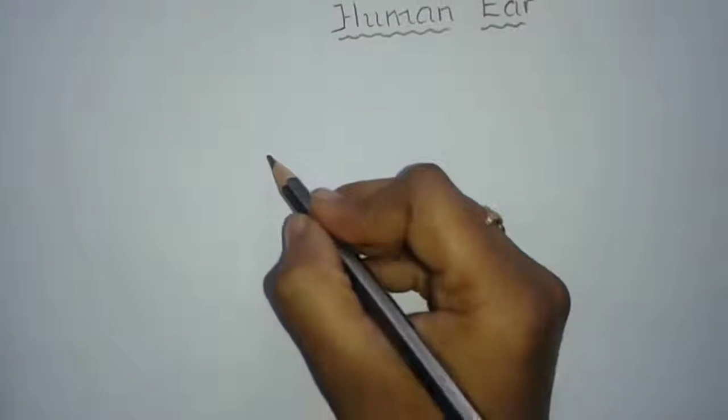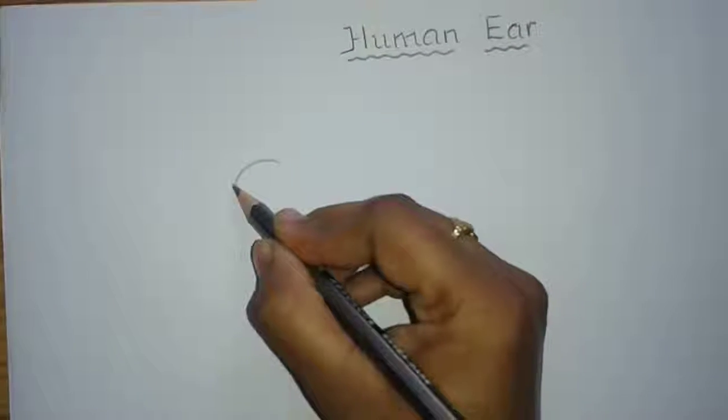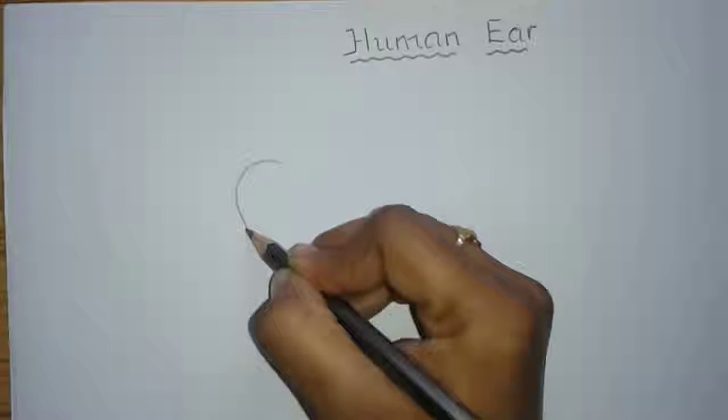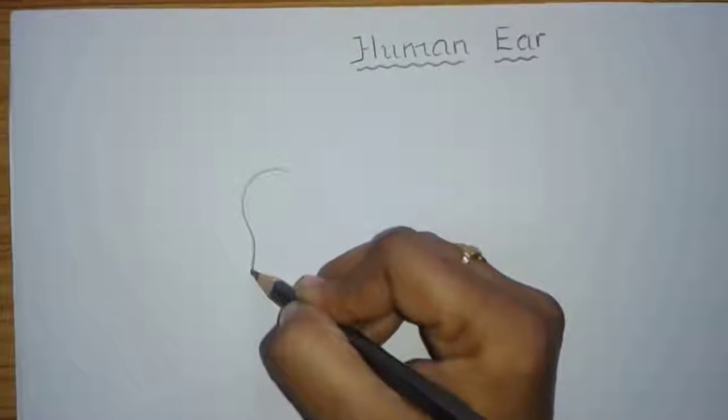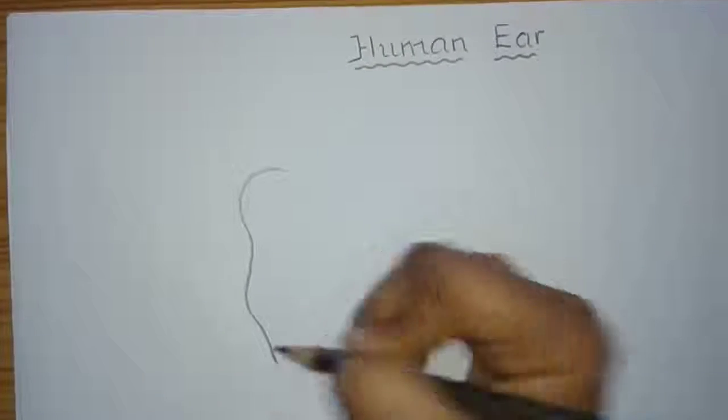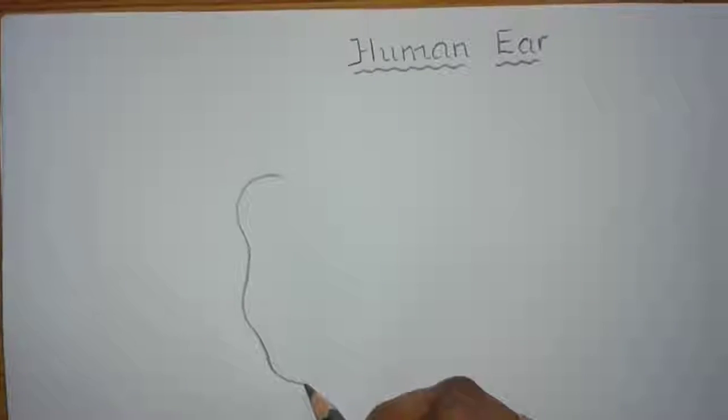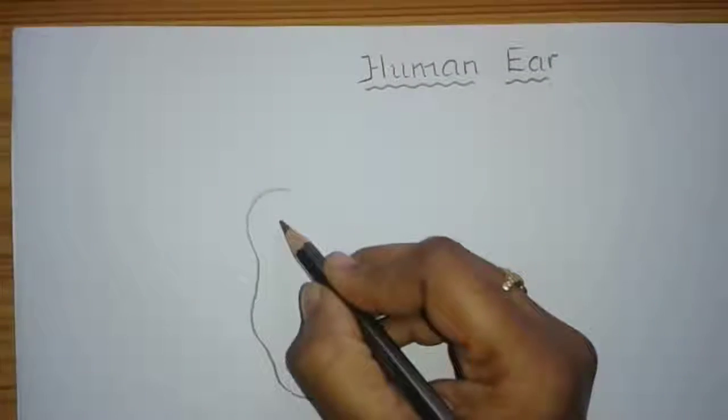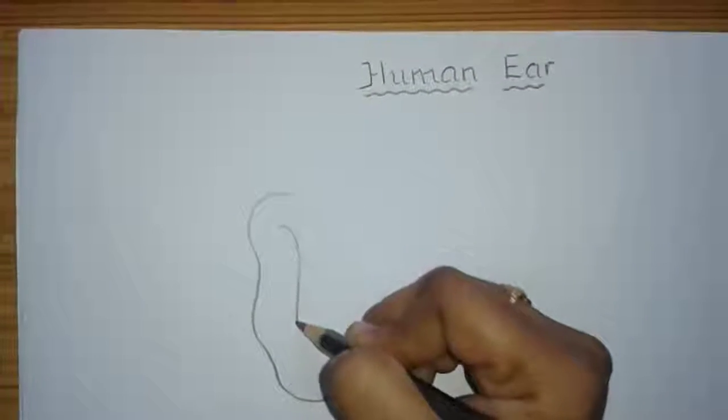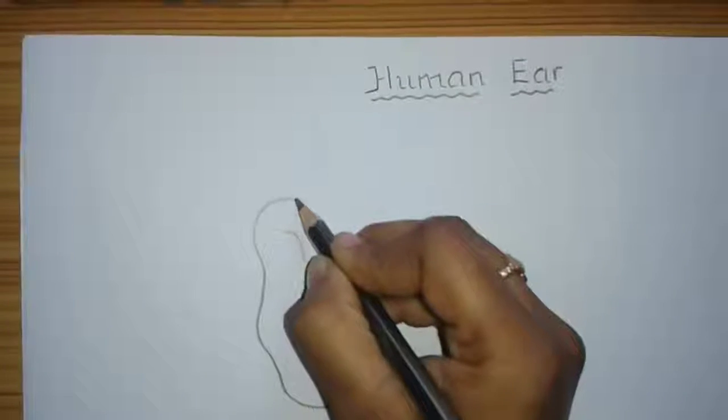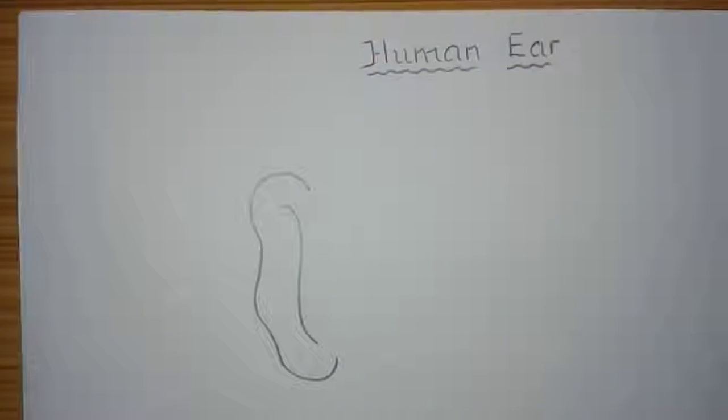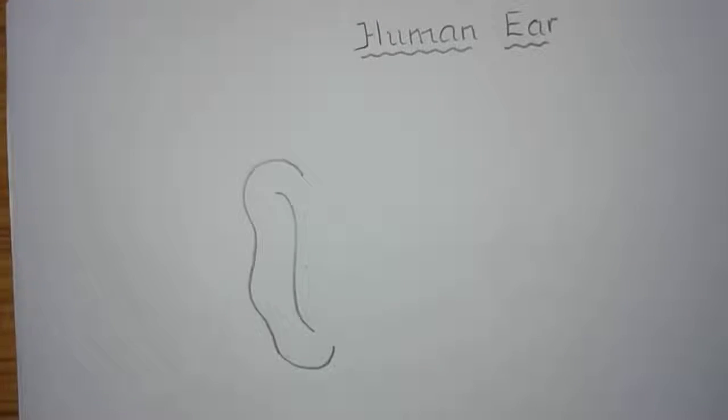First let us draw the pinna which collects the sound wave and directs them into the auditory canal. So children draw the pinna like this. Inside the pinna you just draw an S-shaped curve. This pinna collects the sound wave and directs them into auditory canal.